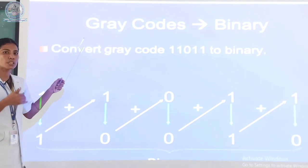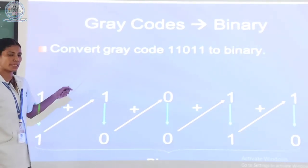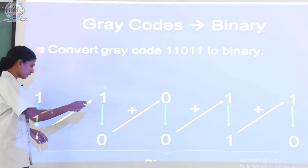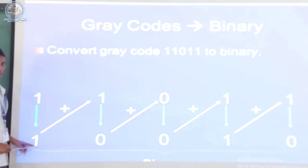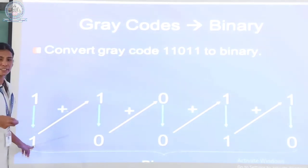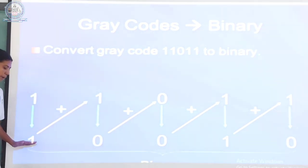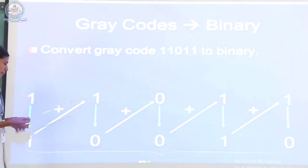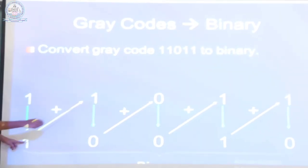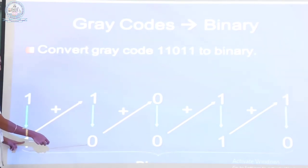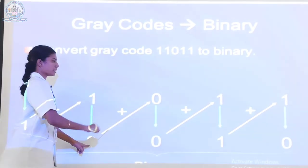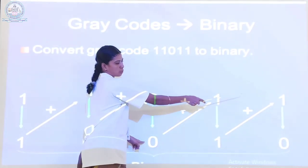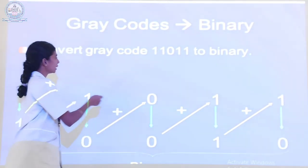Next one is gray code to binary. Here the gray codes are given. Totally five digits are present. The first digit 1 is placed directly. Then in sequence order from top to bottom: 1 plus 1 equals 0; 0 plus 0 equals 0; 0 plus 1 equals 1; 1 plus 1 equals 0. Here the gray code is converted into binary.